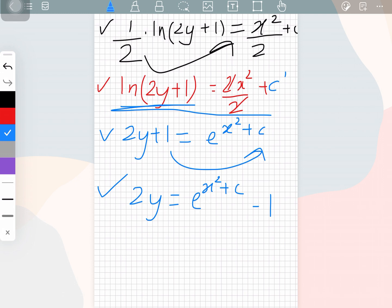So after this, what we can do is we can also send the 2 to the other side and express this whole equation in the form of y. So y is equal to 1 over 2 e to the power x to the power 2 plus c minus 1 over 2.